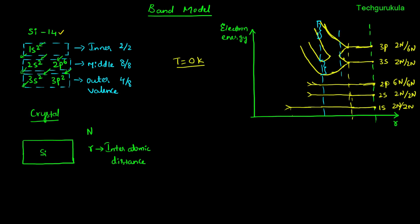We need to understand three categories. Before the levels merge and after they split: in the first category, for the upper sub-band we have 6n states with 2n filled, and for the lower 2n out of 2n filled. In the merging range: 8n states with 4n filled. In the third case — after splitting — the bottom band has 4n states all filled with 4n electrons, the top band has 4n states with zero electrons, and the energy range in between has no energy levels at all. This is called the energy gap.